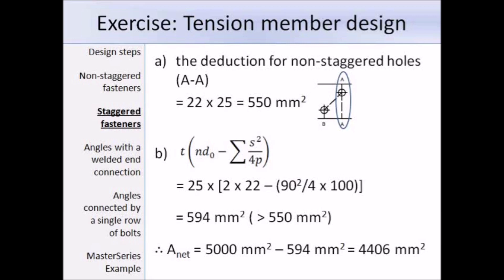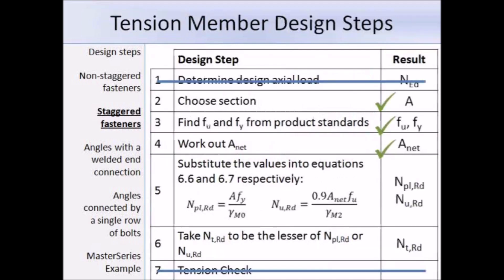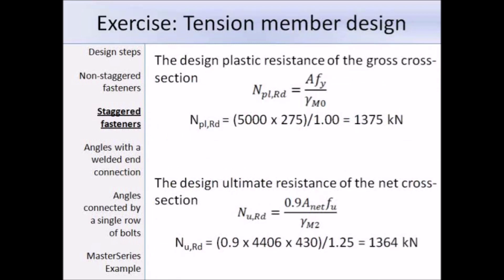Substituting into the equations: the design plastic resistance N_pl,Rd is 1375 kN, and the design ultimate resistance N_u,Rd is 1364 kN. The overall design tensile resistance is the lesser of the two. In this case the design ultimate resistance is smaller, so the design tensile resistance for this example is 1364 kN. That completes all the design steps for working out the tensile resistance of this section.